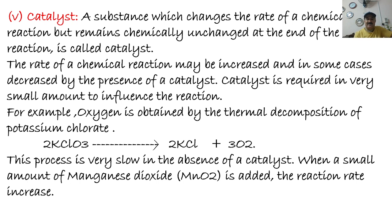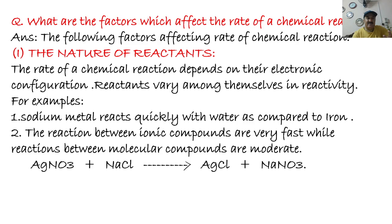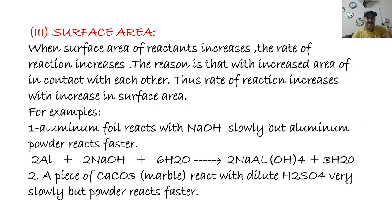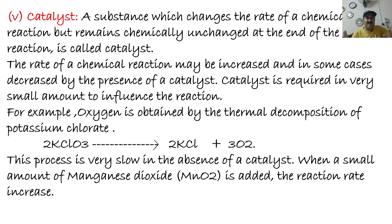So these were the five factors which can affect the speed of chemical reactions: number one, the nature of reactants; number two, concentration of reactants; number three, surface area; number four, temperature; and number five, catalyst.